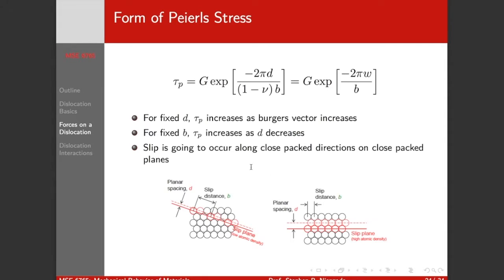That means we're going to slip along directions that minimize our Burgers vector, so we're going to slip along close-packed directions where we can, or nearly close-packed directions. And if we fix our Burgers vector, we can see that as d gets closer, as our planar spacing gets closer, our Peierls stress increases. So our close-packed planes are the most separated in our crystal. The lower the density, the closer the planes. So it's much more difficult to move a dislocation on a non-close-packed plane than on a close-packed plane.